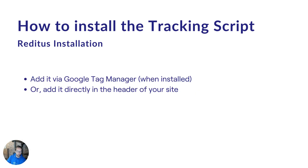How to set it up: if you have Google Tag Manager live, it's really easy — just copy and paste the script and fire it on all pages. If you don't have Google Tag Manager, you can also add it into the header of your site. If you need help with this, go to the relevant help article and I walk you through it step by step.